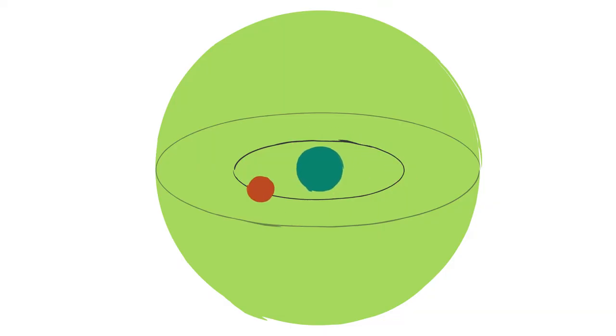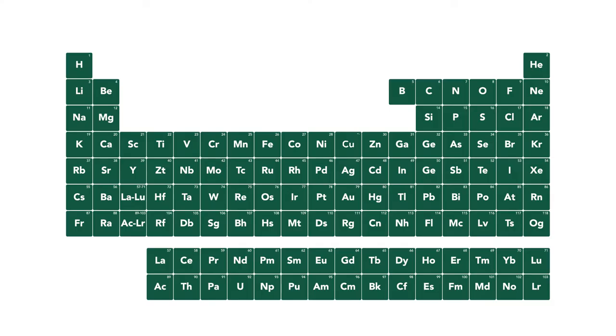The difference in the energy level will give you a different color, and so each individual metal salt will have a different color. For example, if you have a sodium salt, you're going to have yellow fireworks.